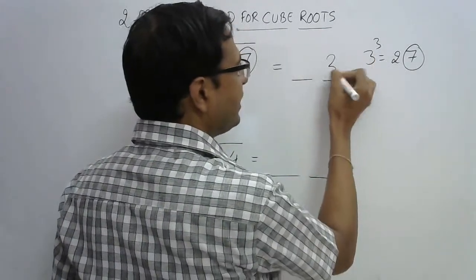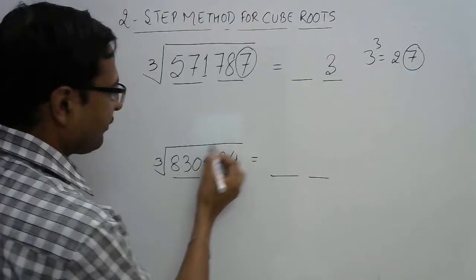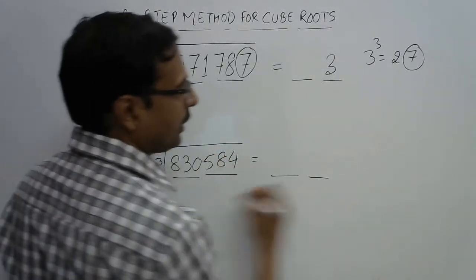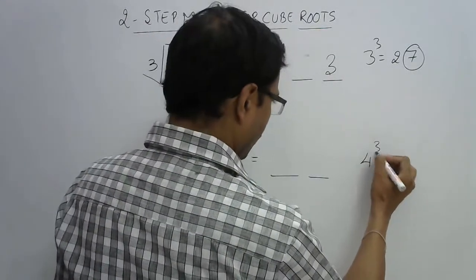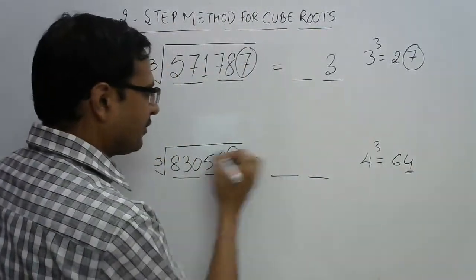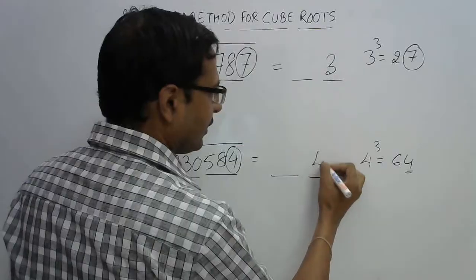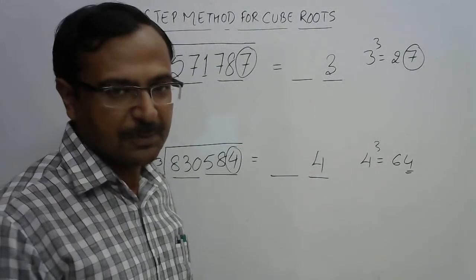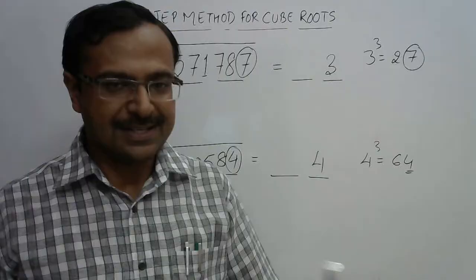Likewise, if you see here 584, we have a 4 here. So 4 cube is 64, which ends with 4 and this is also ending with 4. So 4 will be the digit at the unit place of the second number. Now, what about the tens digit?